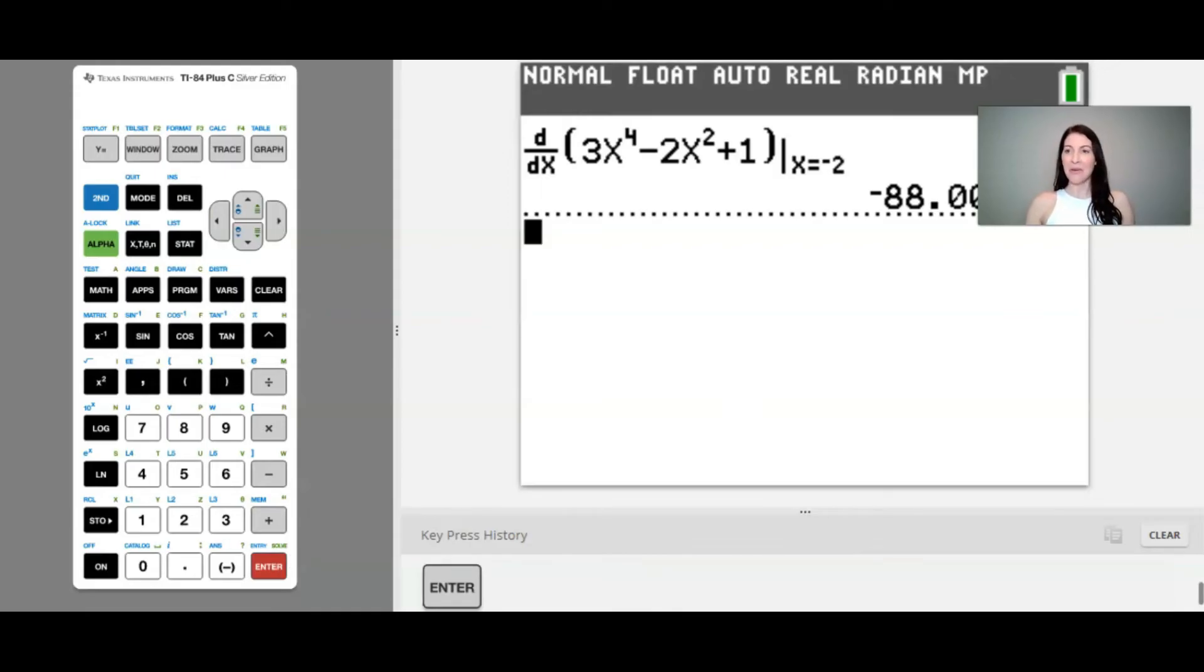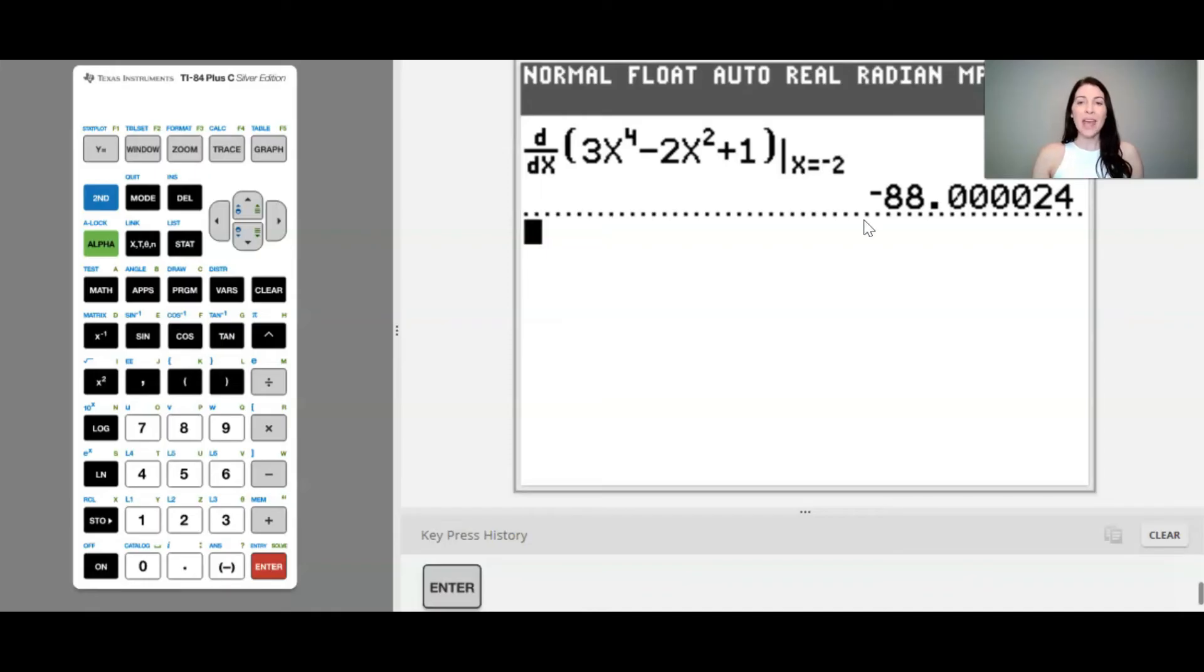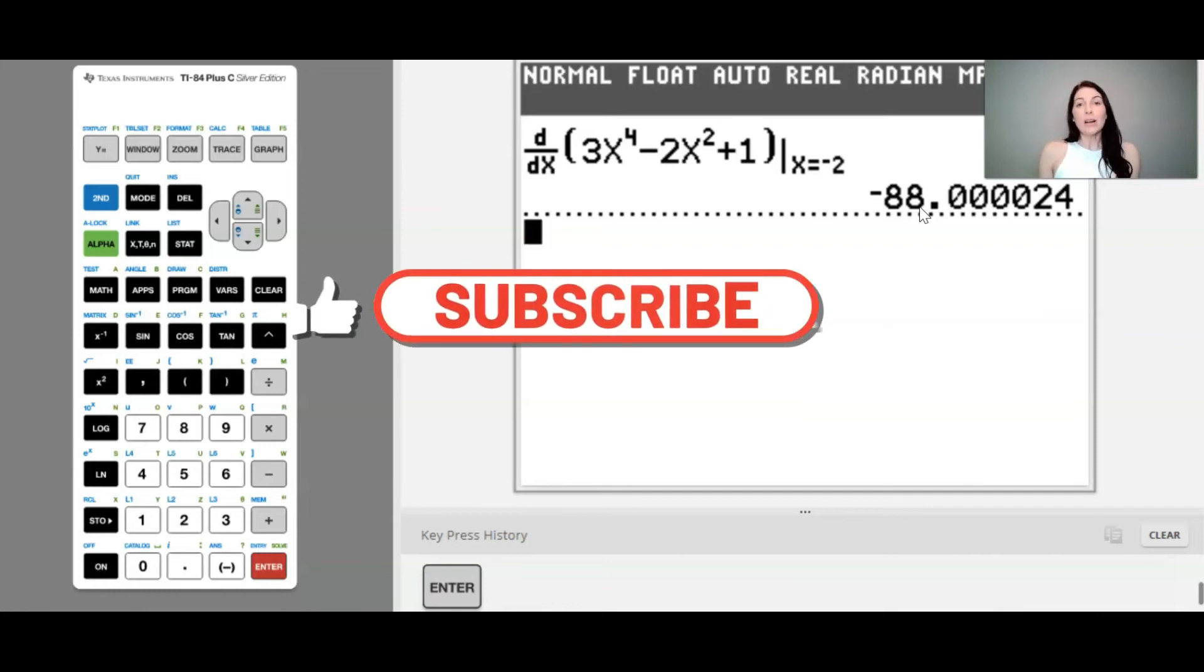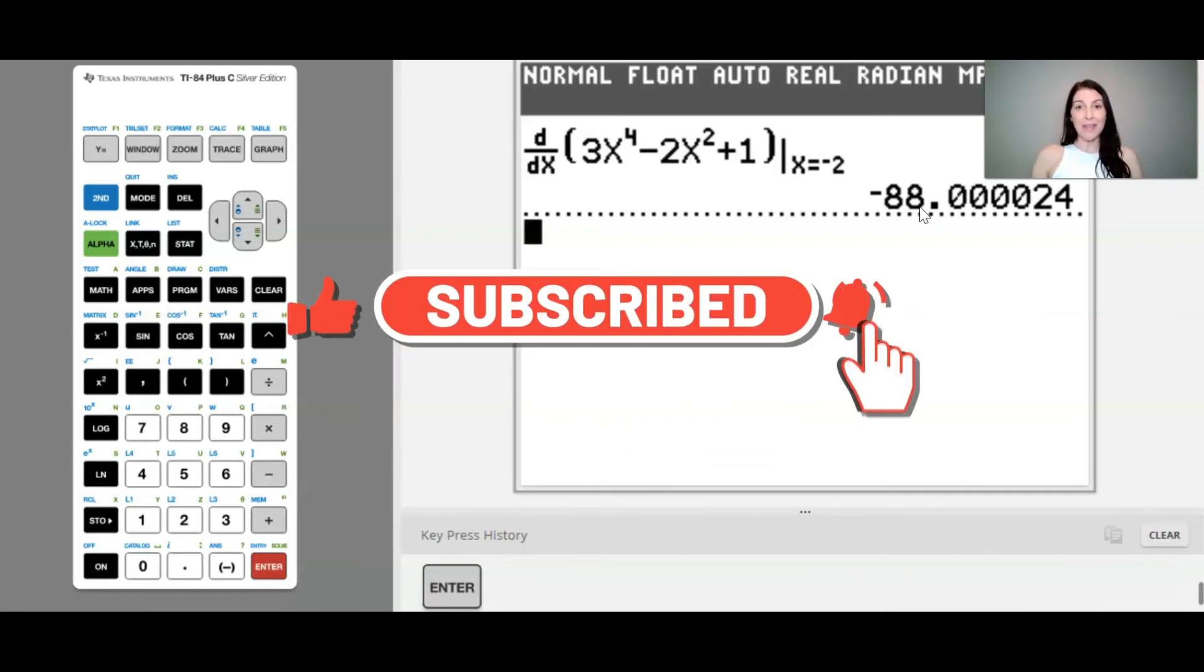Now, if I move my head out of the way, you can see that it gives us this decimal answer with a .24 at the end. So the actual derivative of this function evaluated at negative 2 is just the number negative 88. And I know that because I calculated this derivative by hand just to check my work. And I did get the exact number of negative 88. So remember the calculator is kind of doing its best to approximate the derivative. So get rid of these decimals after and we know the derivative of this function evaluated at negative 2 is only negative 88.